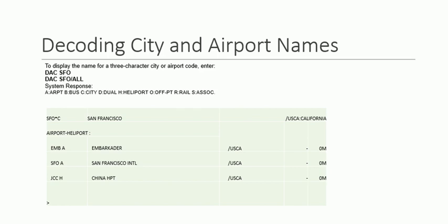When you type that command, the system response shows naming conventions similar to the previous one: A is for airport, B is for bus, C is for city, D is for dual heliport or offports rail, and S is for association.